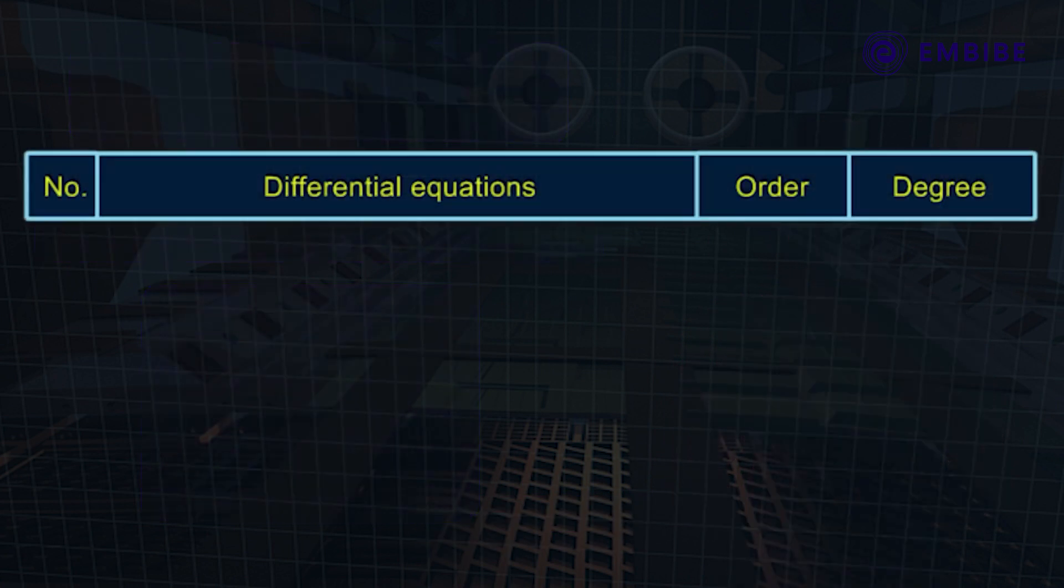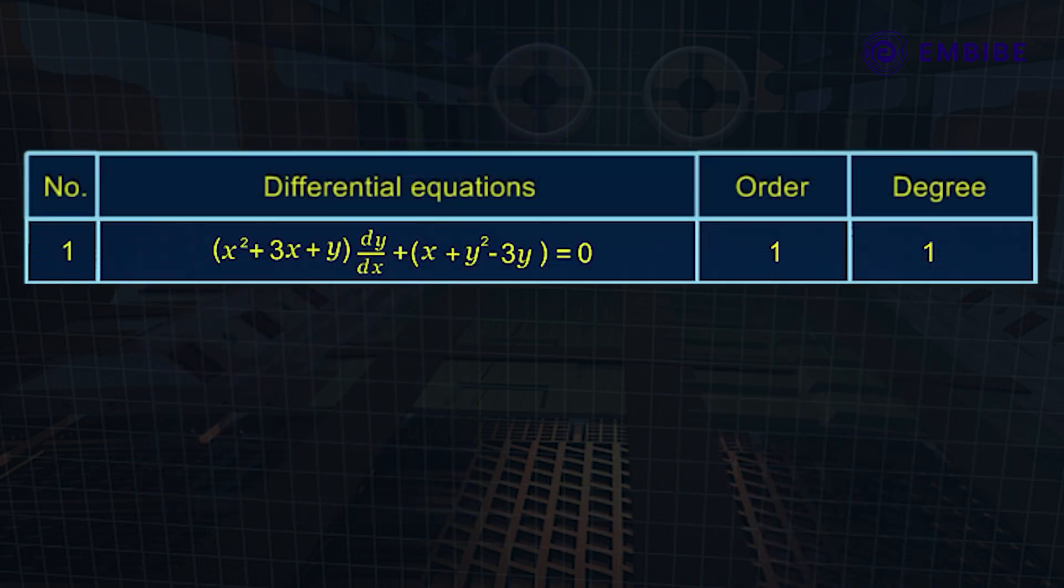Number one: (x² + 3x + y)(dy/dx) + (x + y)² - 3y = 0. Here the order is equal to 1 and the degree is equal to 1.